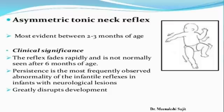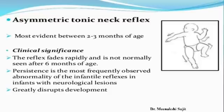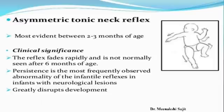Next is the tonic neck reflex, which is of two types: asymmetric tonic neck reflex and symmetric tonic neck reflex. For the asymmetric tonic neck reflex, usually done in a baby of 2 to 3 months, make the baby lie in a supine position and move the baby's head to one side. For example, if you move the head to the right side, automatically the left upper and lower extremities of the baby will move upwards towards you. This reflex disappears around 6 months of age.